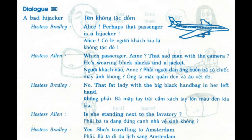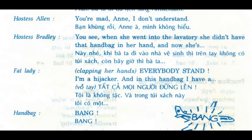Dialogue: A bad hijacker. Listen. Alice: perhaps that passenger is a hijacker. Which passenger, Anne? That sad man with the camera? He's wearing black slacks and a jacket. No, that fat lady with the big black handbag in her left hand. Is she standing next to the lavatory? Yes, she's travelling to Amsterdam. You're mad, Anne. I don't understand. You see, when she went into the lavatory, she didn't have that handbag in her hand. And now she's... Everybody stand. I'm a hijacker. In this handbag, I have a...